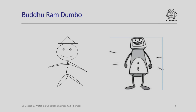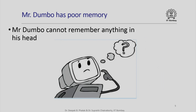This is Mr. Buddhuram Dumbo. He is a line caricature of Mr. Dumbo. Here is a more solid form. He looks like a robo, but he is not a robo — he is a human caricature. So let us see what Mr. Dumbo can do and what Mr. Dumbo cannot do.